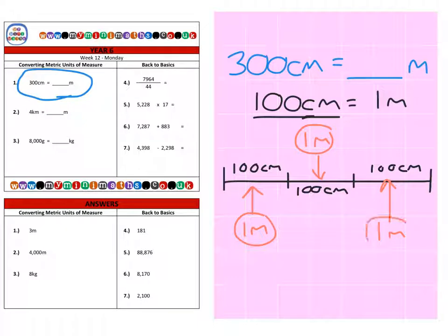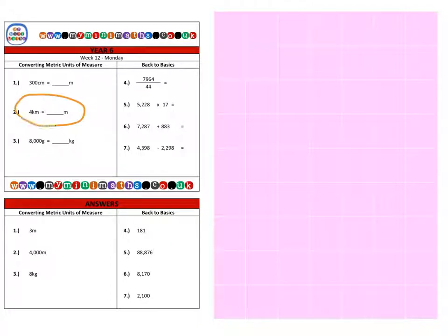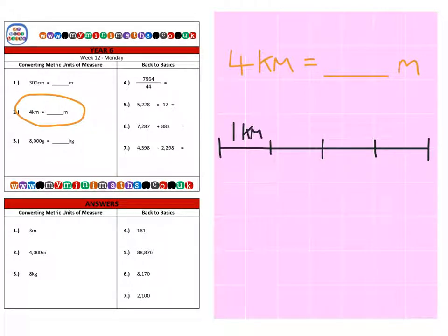Next we're on to question 2, which is taking 4 kilometers and we're going to find how many meters fit into those 4 kilometers. Again, if we take our 4 kilometers and split it into four equal sections - I've got one kilometer here, one kilometer here, another one here, and finally the fourth kilometer at the end.